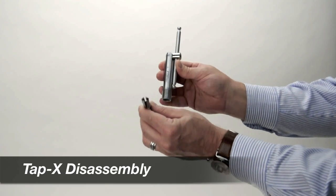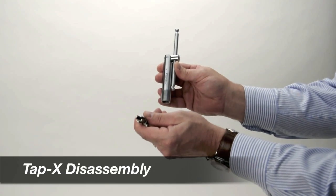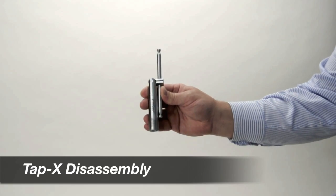You'll notice the collet is two-sided. The small side fits taps in the 1/8 to 1/4 inch range. The large side fits taps from 1/4 to 1/2 inch.